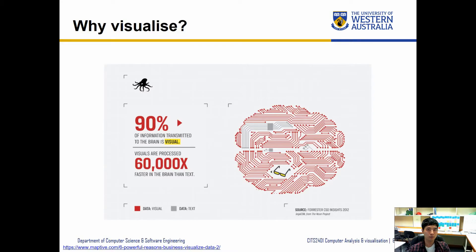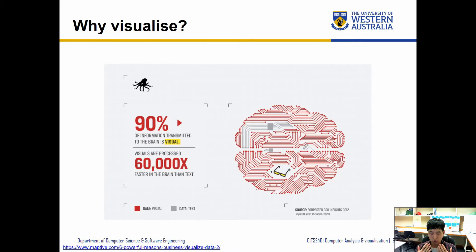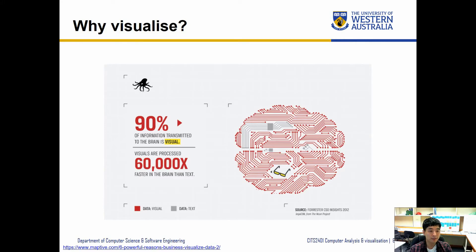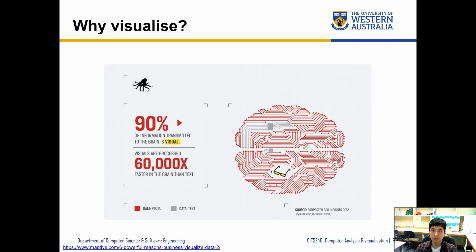So why do we want to visualize? Why can't we just explain in words and writing what it means? Well, 90% of information transmitted to the brain is visual, so we understand things better by looking at changes or what it means. Visuals are processed 60,000 times faster in the brain than text. By visualizing things, we can persuade others better and explain the meaning of the data we are handling in a context that is easier for others to understand.